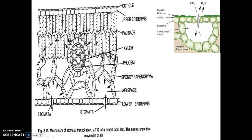Here is the anatomy of the leaf. This is the upper surface and this is the lower surface. Stomata are also present on the upper surface but in very small numbers; at the lower surface, stomata are highest in number. The upper surface is covered by the cuticle, epidermis, palisade parenchyma, and spongy parenchyma with large intercellular spaces. The stomata are present on the lower side, and these intercellular spaces also help in the transpiration process.